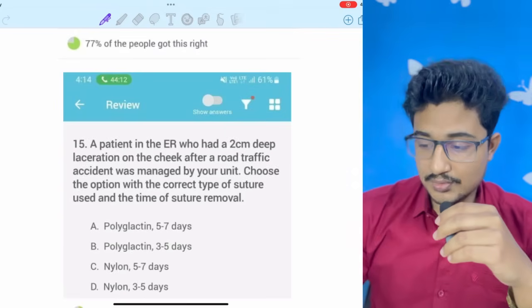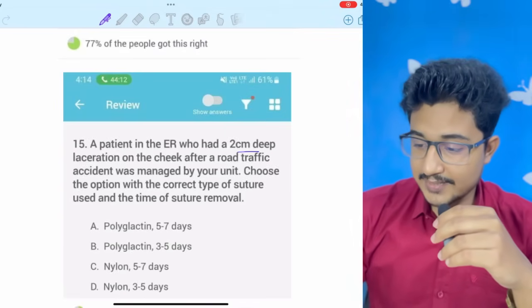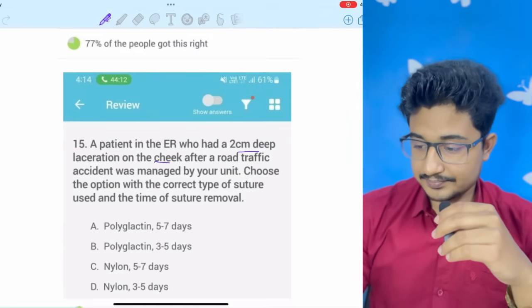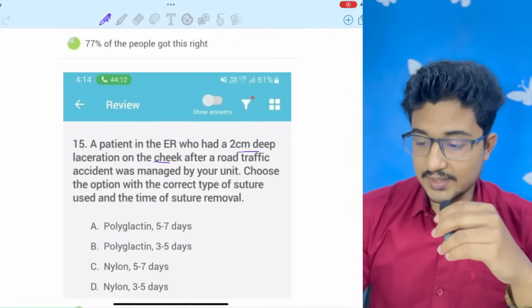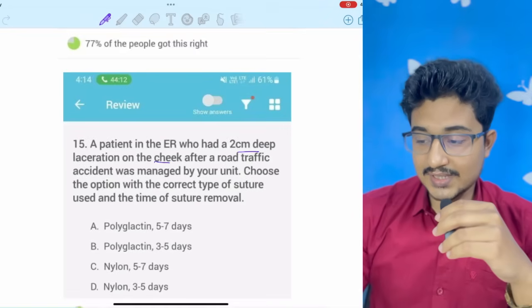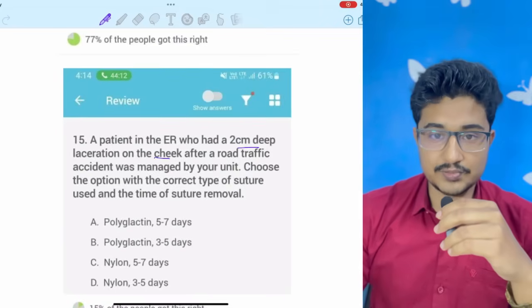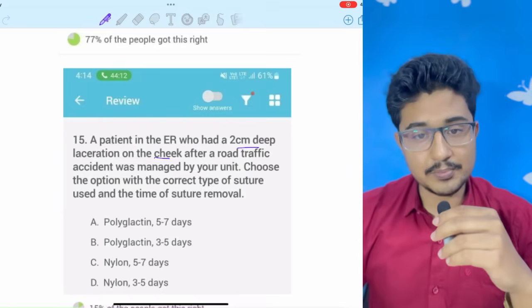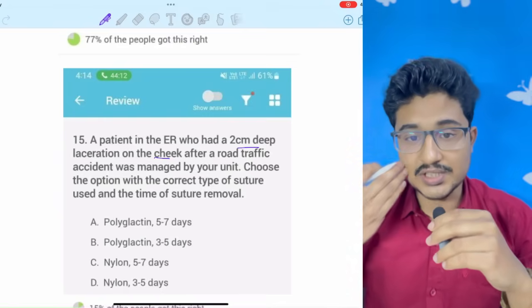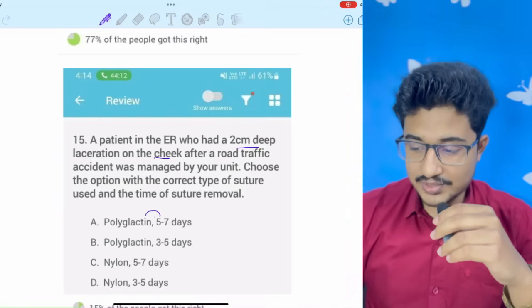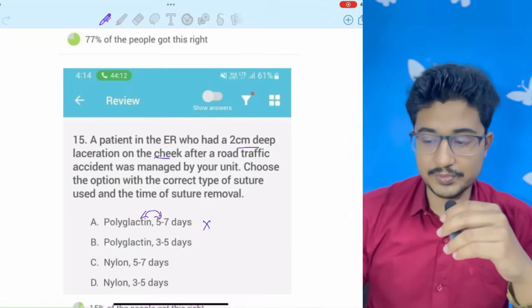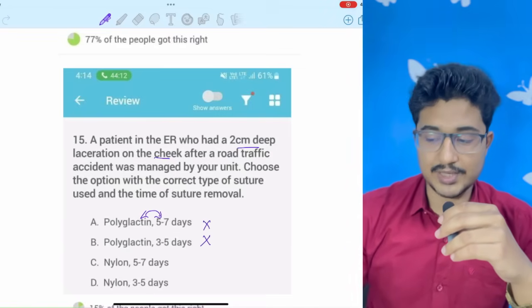A patient in ER who had a 2 cm deep laceration on cheek after a RTA was managed by your unit, choose the option with the correct type of suture and the time of suture removal. So, polygalectin is absorbable suture. You won't use absorbable suture on cheek because you want to remove it. So, an absorbable suture is there and you are going to remove it. So, these two are ruled out already.